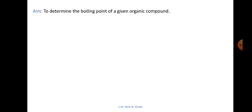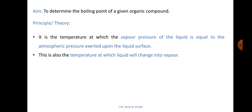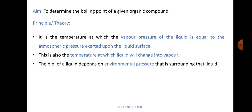The aim of the experiment is to determine the boiling point of a given organic compound in liquid form. The boiling point is the temperature at which the vapor pressure of the liquid equals the atmospheric pressure exerted on the liquid surface — in simple words, the temperature at which a liquid changes into vapor. The boiling point depends mainly on the environmental pressure surrounding that liquid.